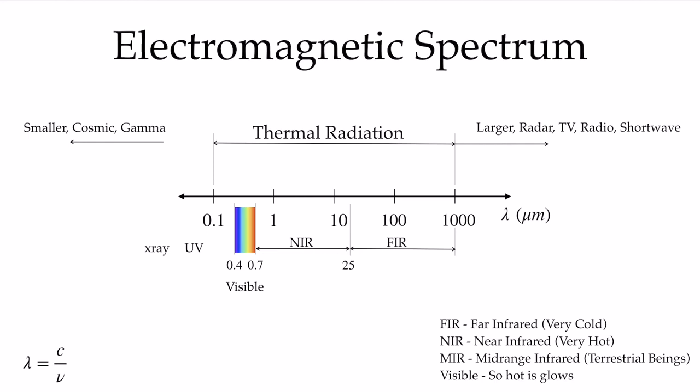Radiation is also a function of wavelength. The electromagnetic spectrum describes the different types of radiation based on their wavelength, and we convert wavelength into frequency through the relation where c is the speed of light. Thermal radiation is that radiation between 0.1 micrometers and about 1,000 micrometers, where we're transferring the bulk of the thermal energy.